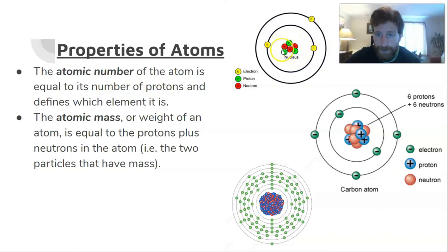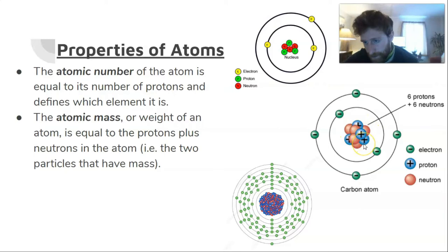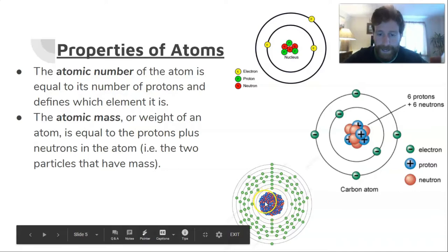Next we have the atomic mass or weight of an atom, which is equal to the protons plus neutrons in the atom. Those are the two particles that have mass. So here I would say the atomic mass of this is six because it's got three protons and three neutrons. Here the atomic mass of this carbon atom is twelve—it's got six protons, six neutrons. Here's a picture I found of a uranium atom, which is huge. It's probably got an atomic mass of like 235 because you can see how large the nucleus is on that particular atom. And then lastly, the charge, which is a measure of how positive or negative an atom is, is equal to the protons minus the electrons in the atom. Remember that charge can be both positive or negative. If I've got more electrons than protons, my charge will be negative. If I have more protons than electrons, my charge will be positive. And if I have an equal number of protons and electrons, then the overall atom is neutral.